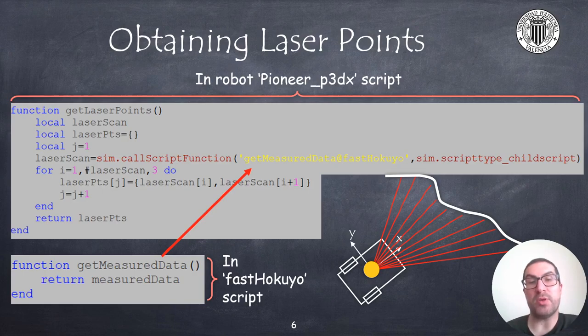And then we need to implement the getLaserPoints function inside the robot script code. This function indeed will call the getMeasuredData function to obtain laser data.